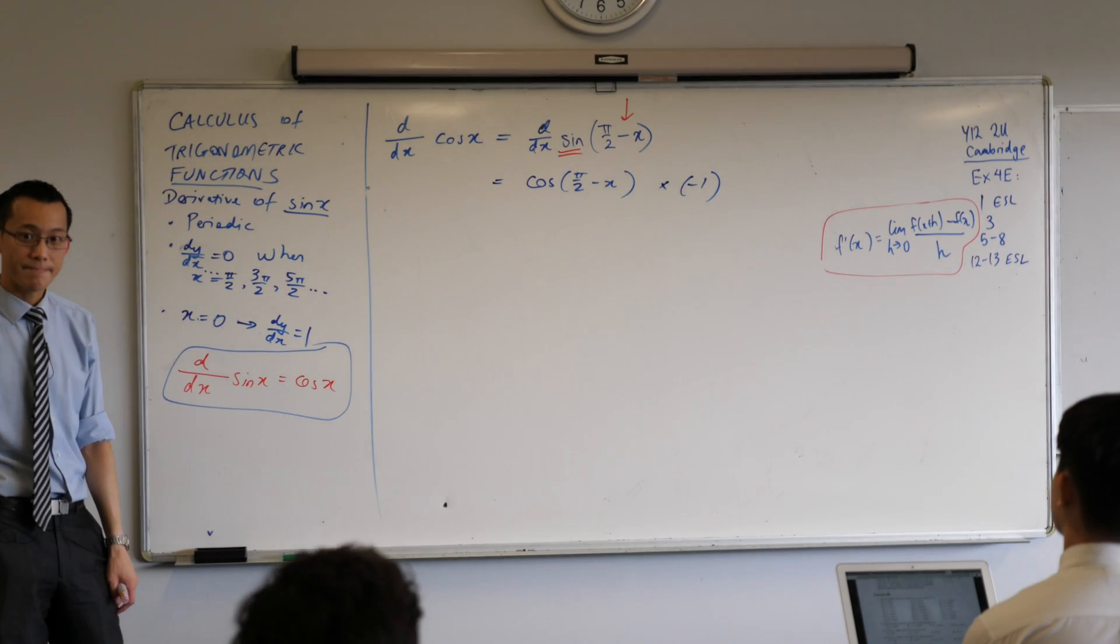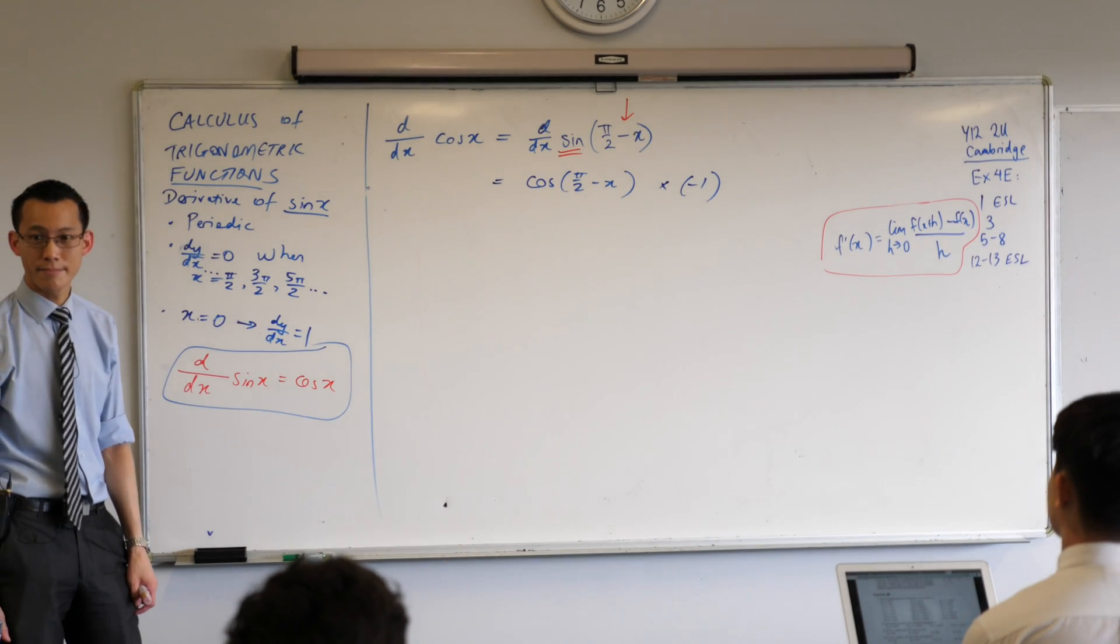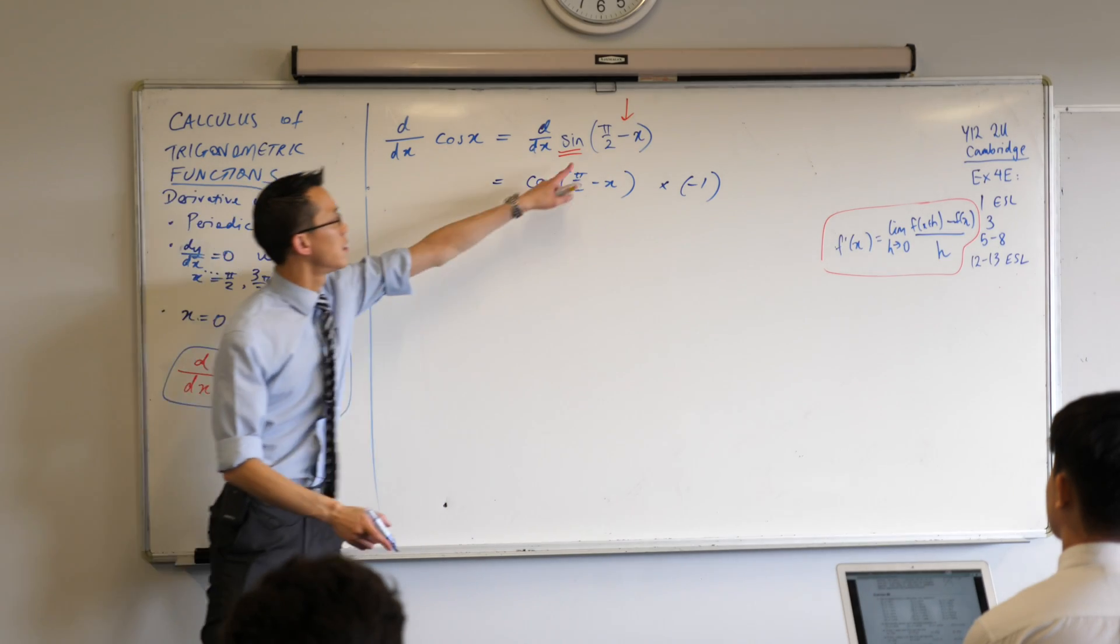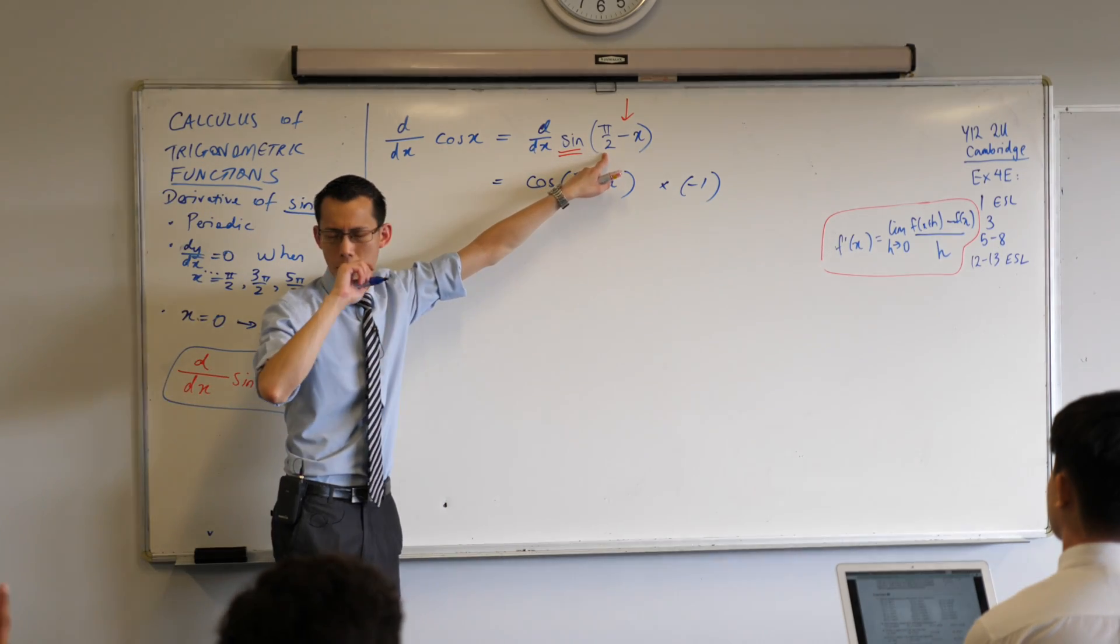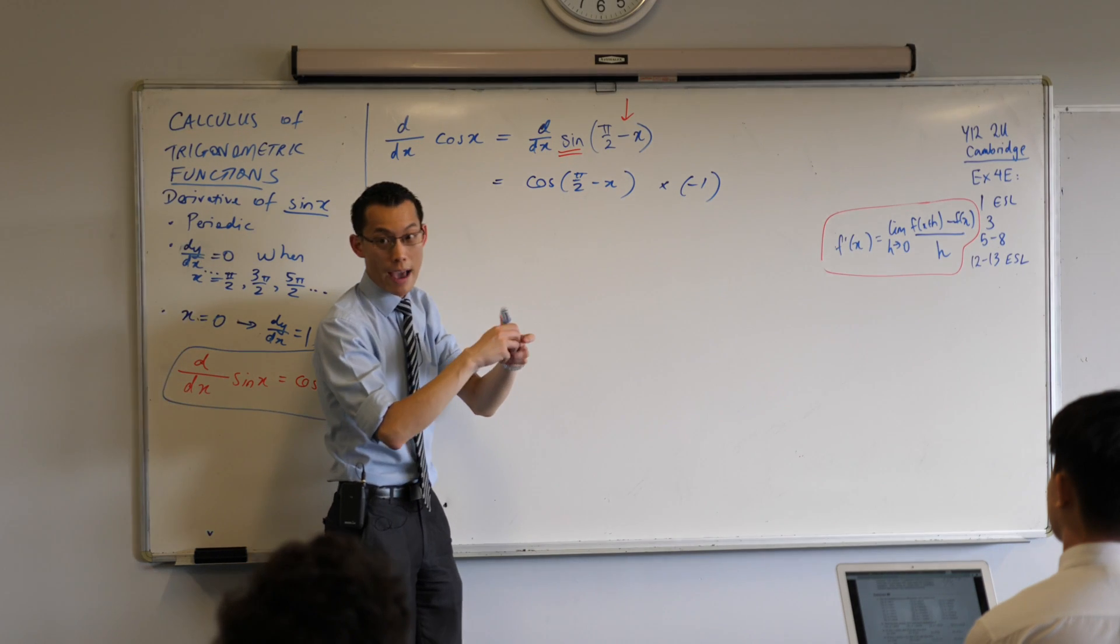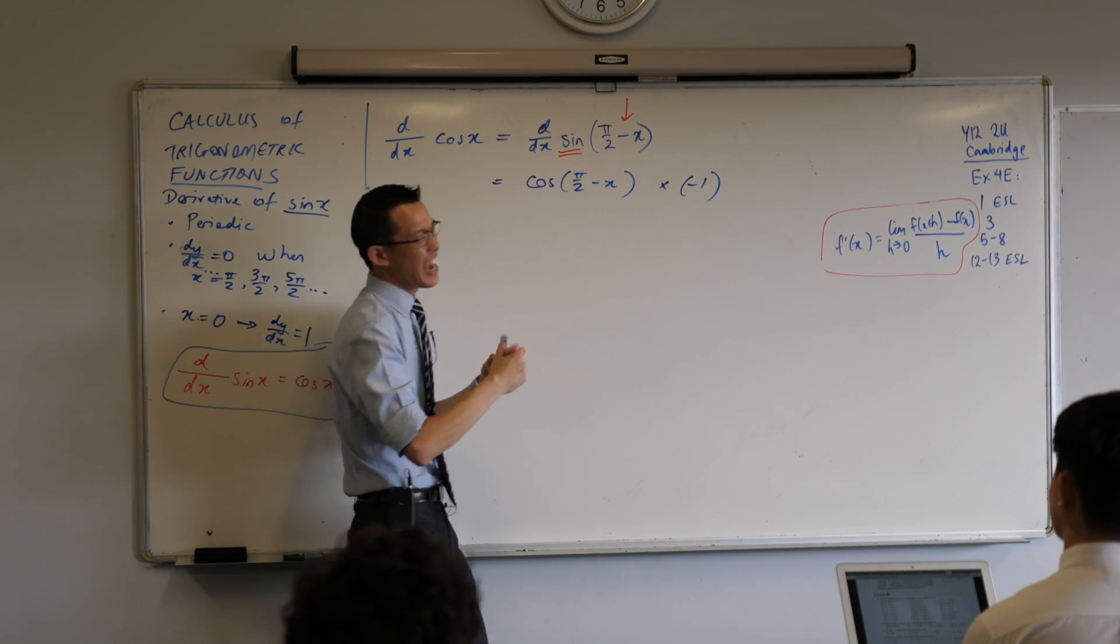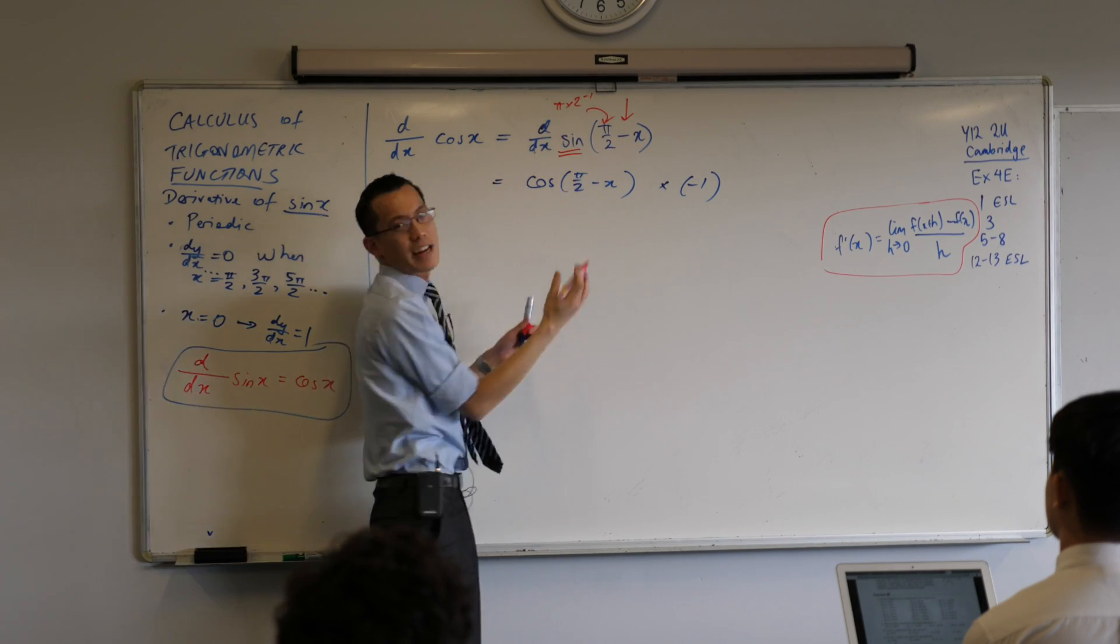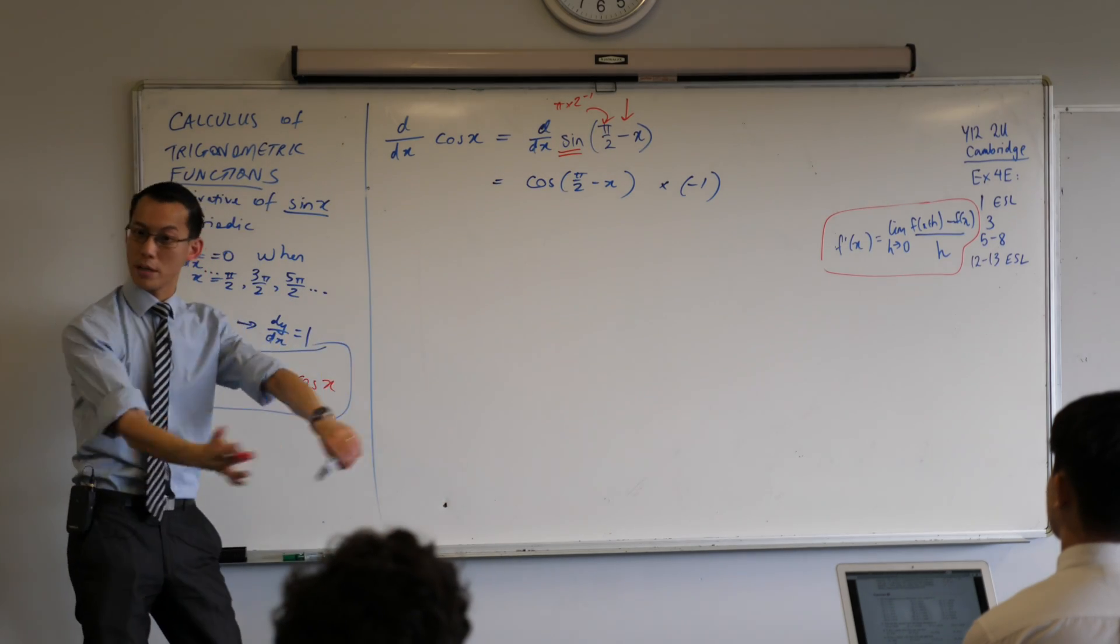Wouldn't pi on 2 also be equal to pi times 2 to the negative 1? Say that again. Pi on 2 would be equal to pi times 2 to the negative 1. Yeah, if you wanted to, you could write that angle there. Yeah, it's kind of like, even though I can write it as pi times 2 to the negative 1, it doesn't actually help me. In fact, I can just ignore it because it's a constant.